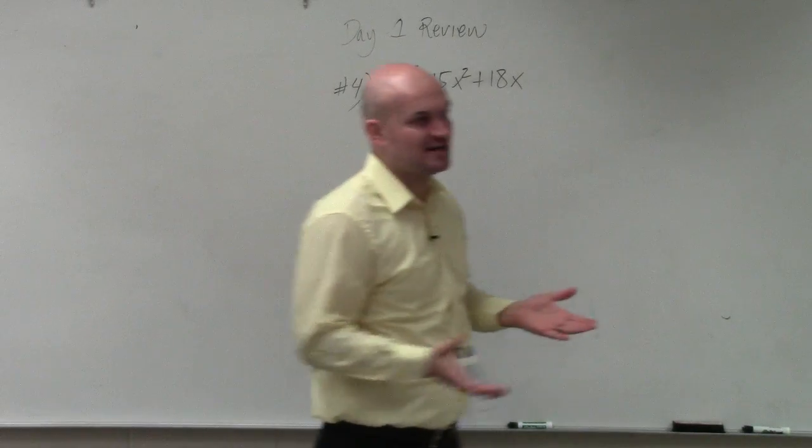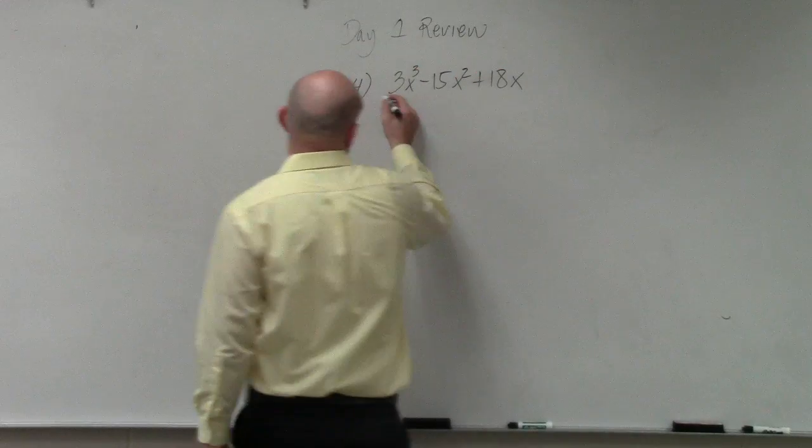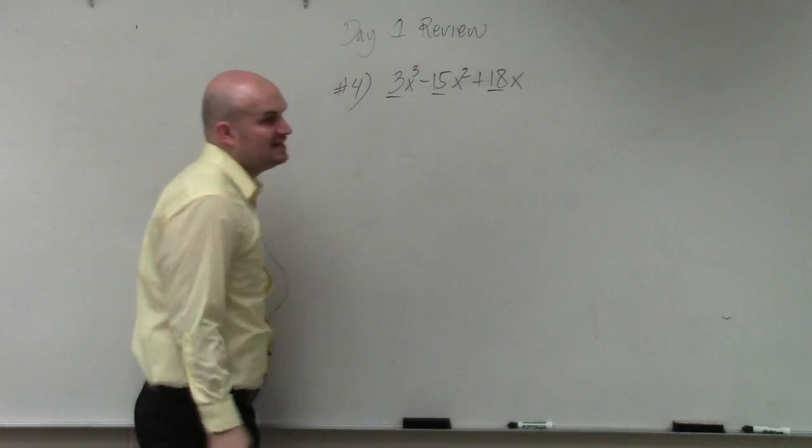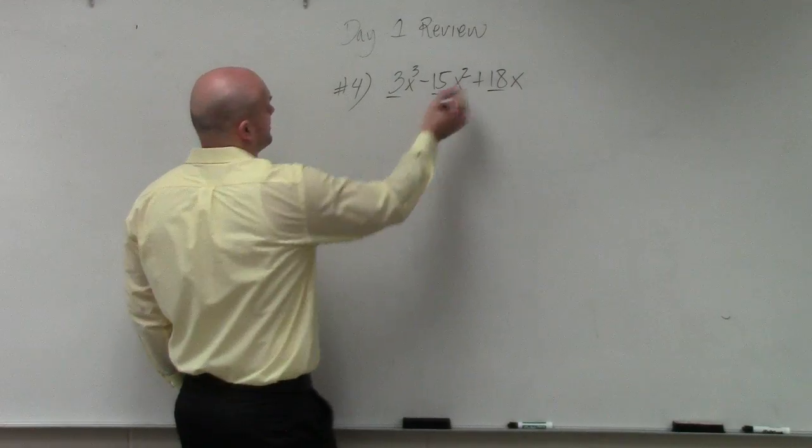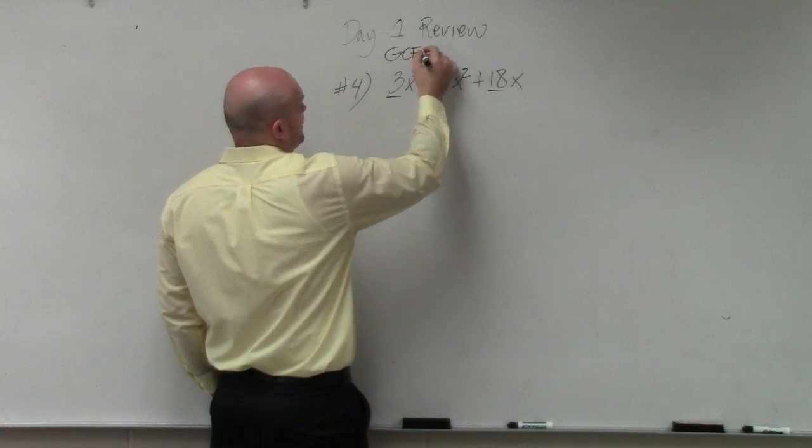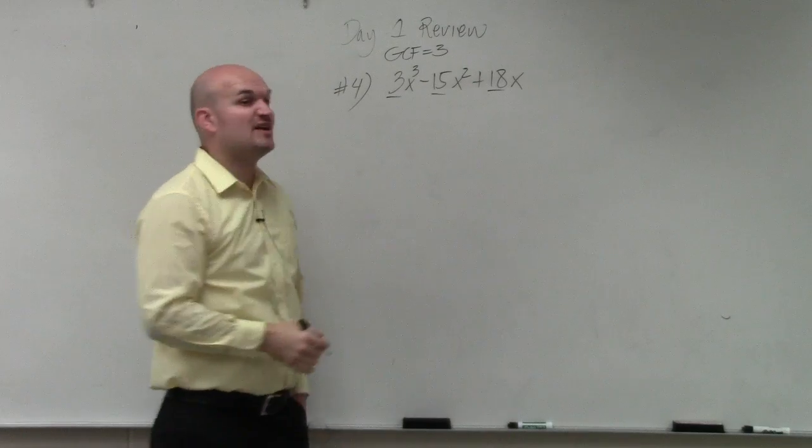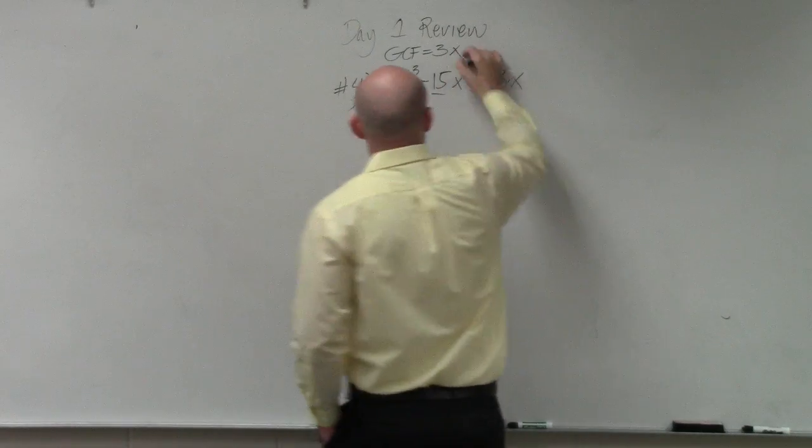Always want to look into factoring out a common factor first. One thing I noticed, the numbers 3, 15, and 18 all have a greatest common factor of 3. So I just write GCF and that's 3. And they also all share an x, so I say 3x.